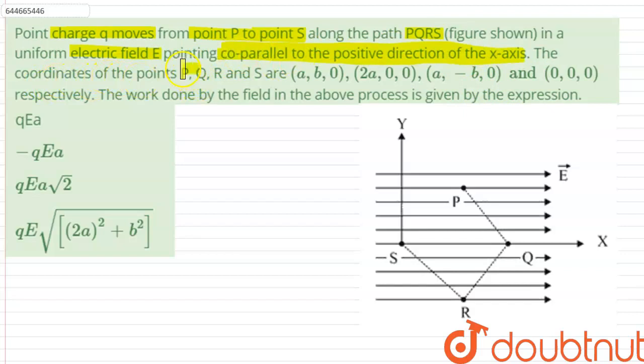The coordinates of points P, Q, R, and S are (a, b, 0), (2a, 0, 0), (a, -b, 0), and (0, 0, 0) respectively.